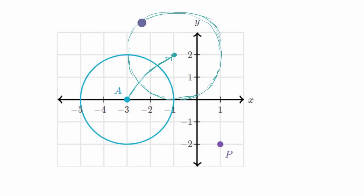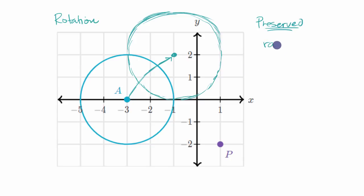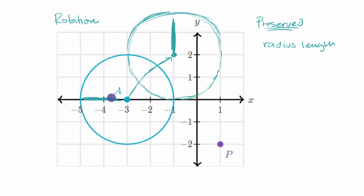The things that are preserved — and we're going to make them clear right now — under a rigid transformation like this rotation: well, you have things like the radius length. The radius here is two, and the radius of the image is also two. You also have things like perimeter. If the radius is preserved, the perimeter of a circle — which we call a circumference — is just a function of the radius: two times pi times the radius. So the perimeter is going to be preserved, which follows from the fact that the radius length is preserved.